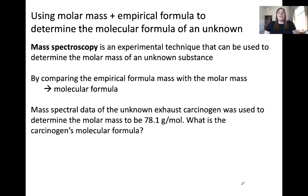If we're given some additional information about this problem, we can see that the mass spectral data of our unknown exhaust carcinogen was used to determine the molar mass as 78.1 grams per mole. Let's find the carcinogen's molecular formula. What we need to do is divide the molar mass, 78.1 grams per mole, by the mass of the empirical formula.